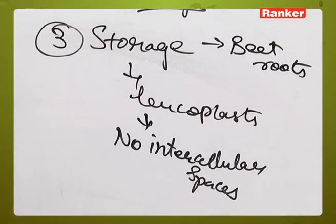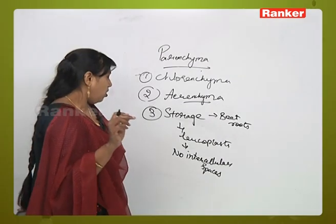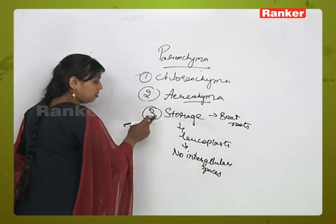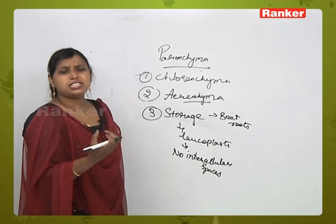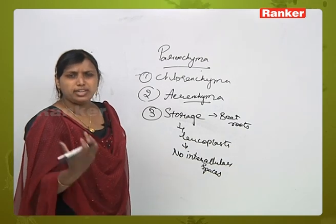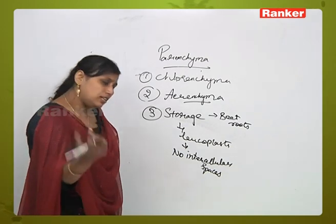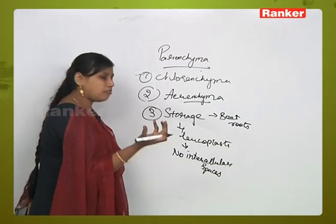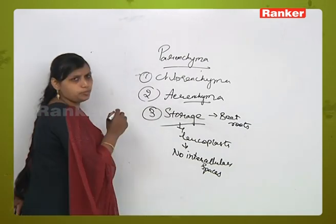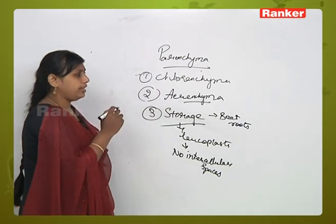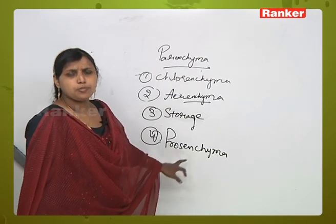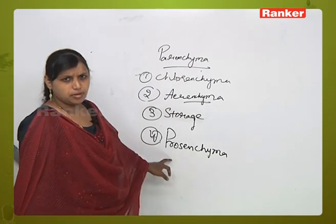Storage parenchyma stores proteins, nitrogenous materials, carbohydrates, and sugars. All food material storage is done by storage parenchyma. The next type of parenchyma is called prosenchyma.